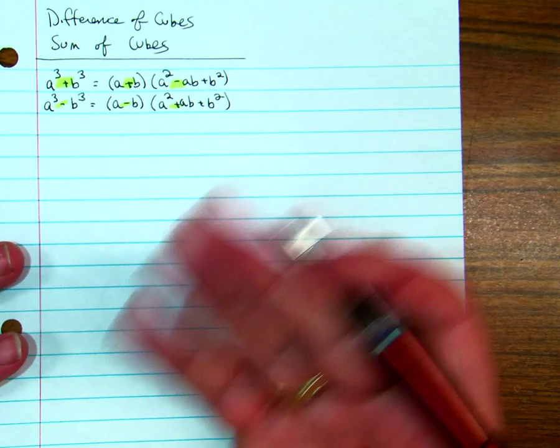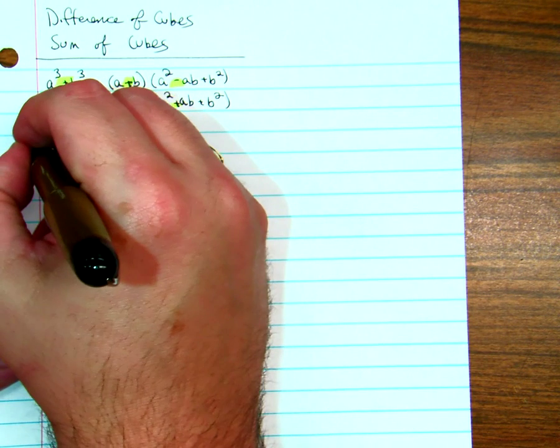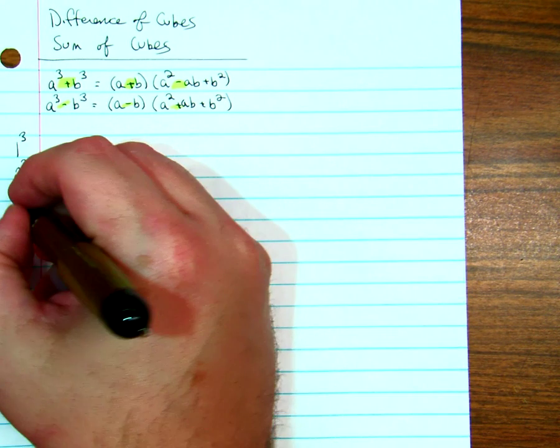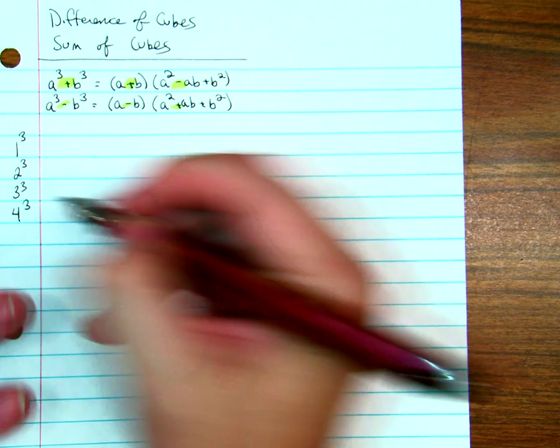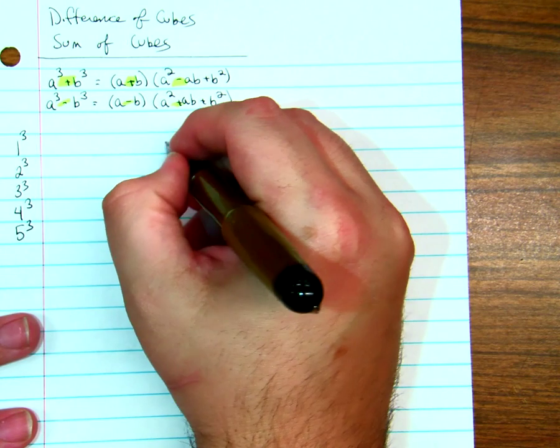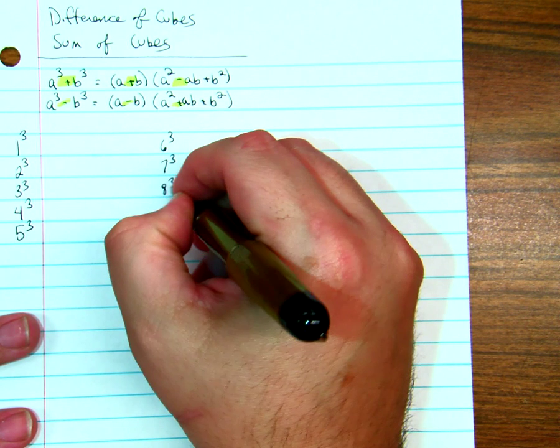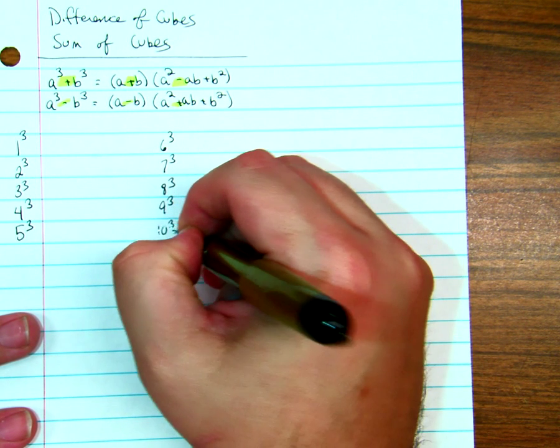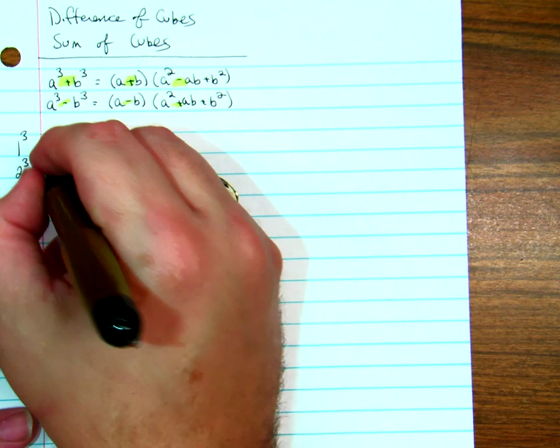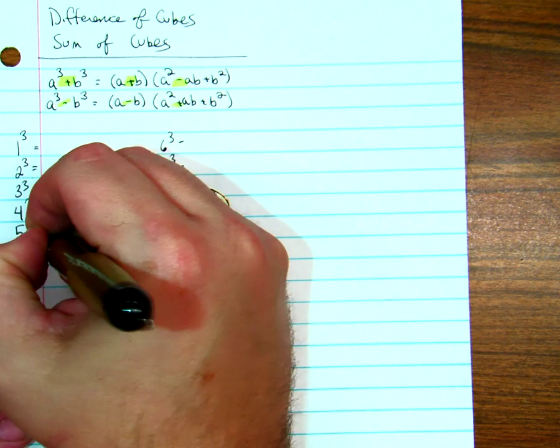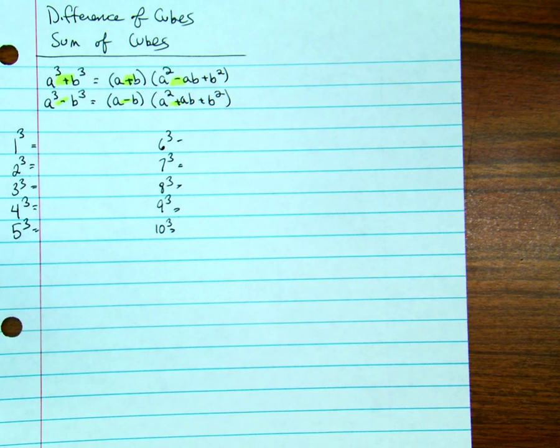Now, in order to complete this, you're going to have to be familiar with these values. You're going to need to figure out the cubes through 10, the perfect cubes. Because we're not going to go too much farther than that, because squaring makes numbers big, but cubing makes them bigger faster.